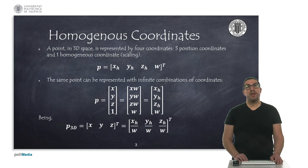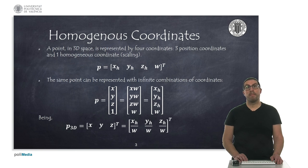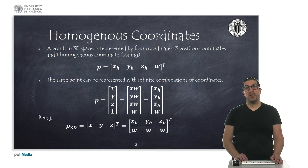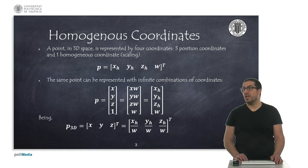In 3D space, a point in homogeneous coordinates is represented by four coordinates: three corresponding to the position coordinates, and another one corresponding to a scaling factor. The representation in homogeneous coordinates is not unique, and therefore there are infinite combinations of homogeneous coordinates that represent the same actual 3D point. We can transform a point in homogeneous coordinates to Cartesian coordinates by simply dividing the three first coordinates by the scale coordinate, as shown here.